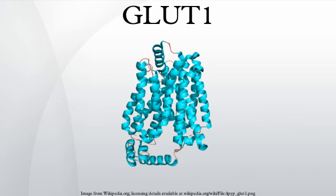Energy-yielding metabolism in erythrocytes depends on a constant supply of glucose from the blood plasma, where the glucose concentration is maintained at about 5 mM. Glucose enters the erythrocyte by facilitated diffusion via a specific glucose transporter, at a rate about 50,000 times greater than uncatalyzed transmembrane diffusion.